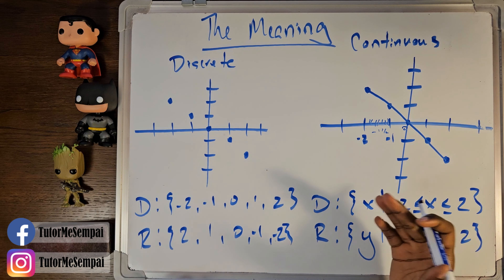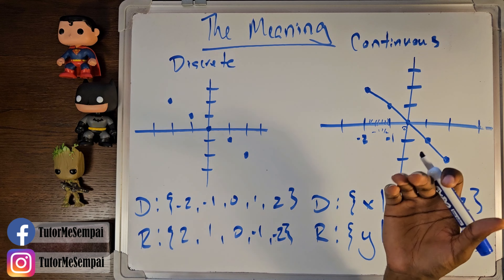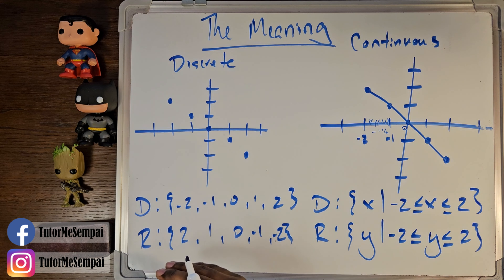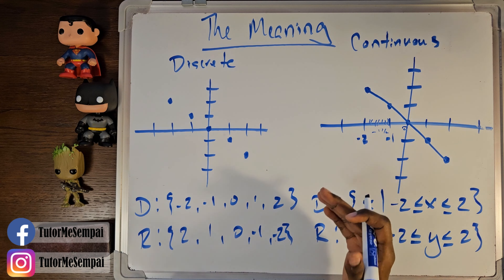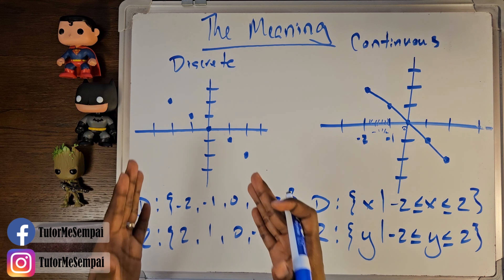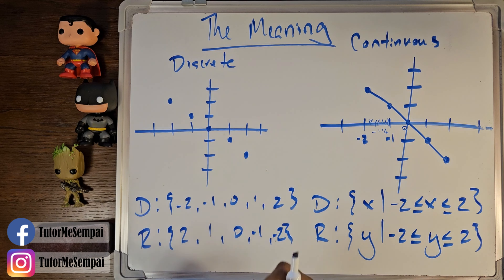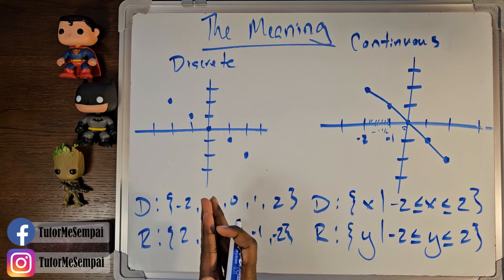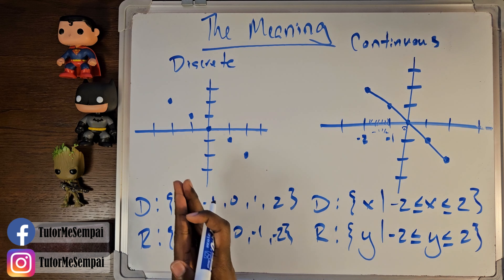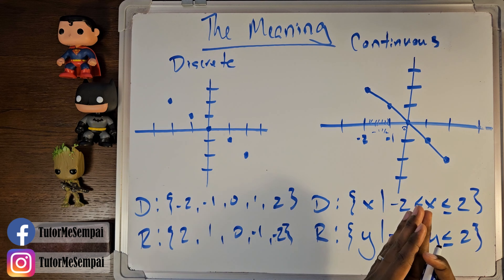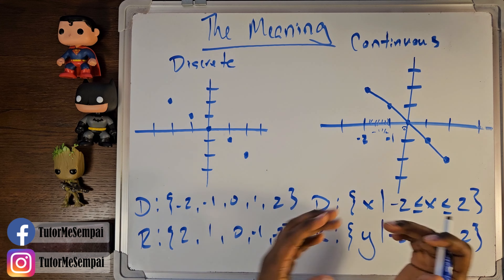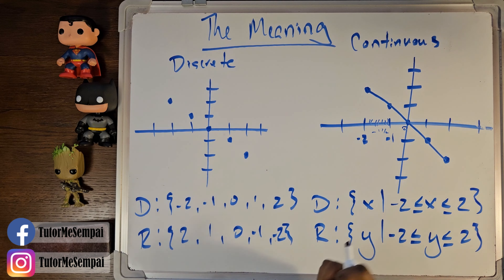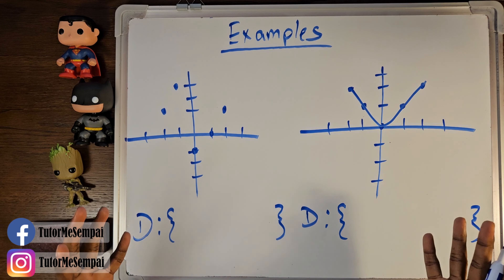So not only do we know visually which one is a discrete versus a continuous graph, we also know why. We know that in order to be a continuous graph, you have to be defined for every x between your smallest and your largest x value. And in order to be considered a discrete graph, you don't need to be defined for every x value, just the particular ones that you see. So let's jump into a few examples to determine which ones are going to be discrete and which ones are going to be continuous, as well as jotting down their domains.